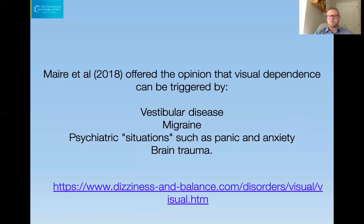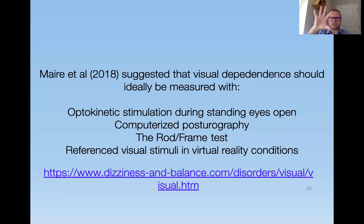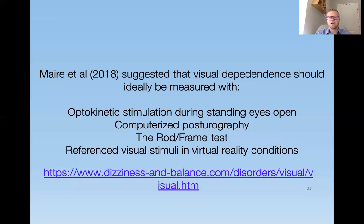Visual dependence can be triggered by vestibular disease, migraine, psychiatric situations, panic or anxiety, overstimulation of brain regions, or brain trauma. We should measure what happens with optokinetic stimulation — for example, does moving information left/right versus up/down versus torsionally give you symptoms? We can do that in a 360-degree virtual reality environment. We're always very careful to avoid overstimulating people and making them worse.